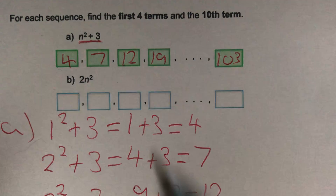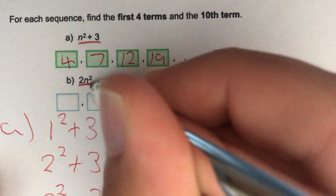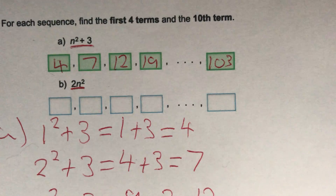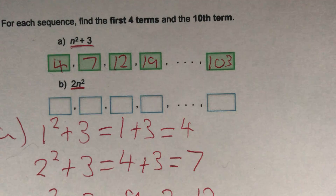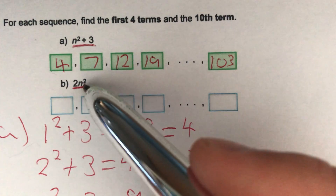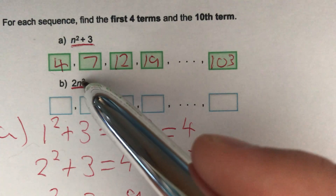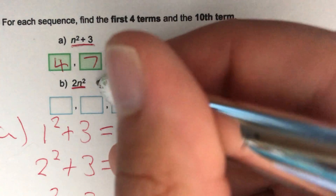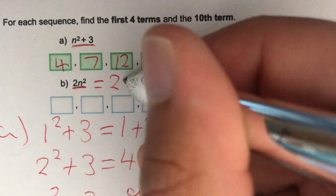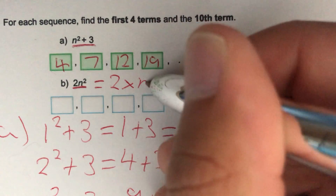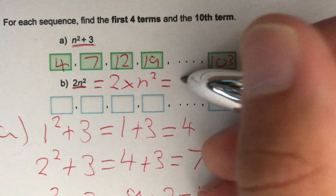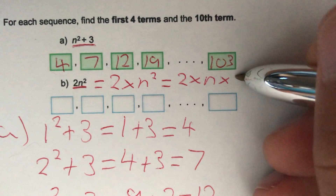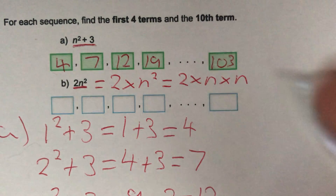For part B, we're asked to find the sequence 2n squared. What this means is that for each term, we square the term number first, and then we multiply it by 2. We could also write this as 2 times n squared, or even as 2 times n times n.